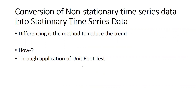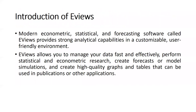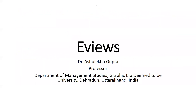The question is how we can convert non-stationary time series data into stationary data. Differencing is the method to reduce the trend, and through application of the unit root test, one of the options available in EViews is differencing. With the help of this option we can convert non-stationary data into stationary data. In the next video I will show you how to run the unit root test using EViews software with actual data. Thank you, keep watching.